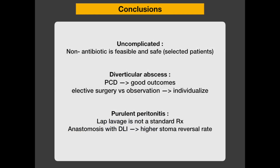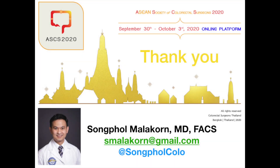In conclusion: for uncomplicated diverticulitis, non-antibiotic management is feasible and safe in selected patients. For diverticular abscess, percutaneous drainage has good outcomes for large abscesses, and elective colon resection after non-operative management should be individualized. For purulent peritonitis, laparoscopic lavage is no longer a standard treatment. Primary anastomosis with a diverting loop ileostomy has a higher stoma reversal rate compared to the Hartmann procedure. Thank you for watching.